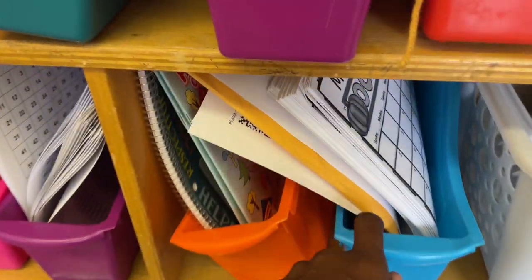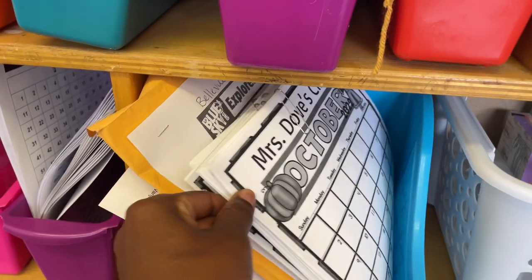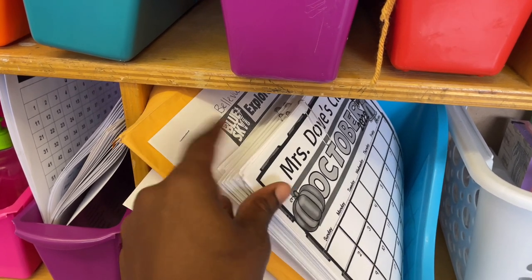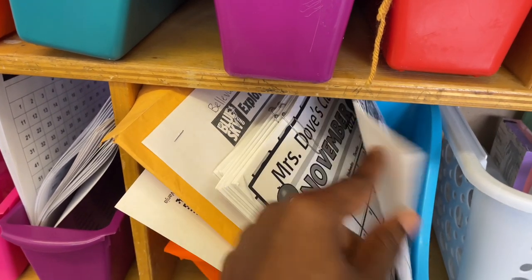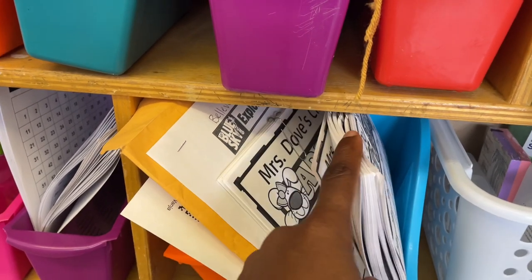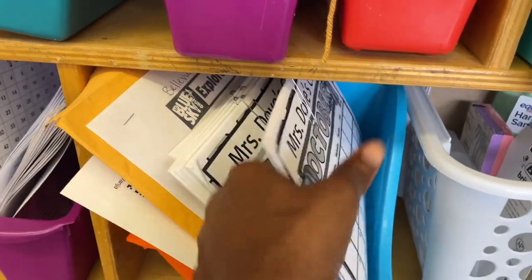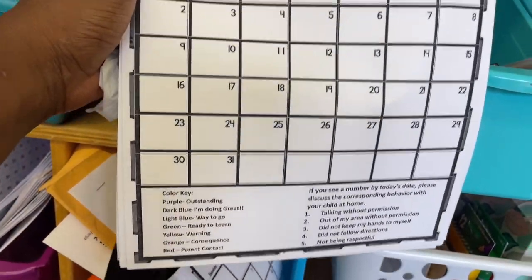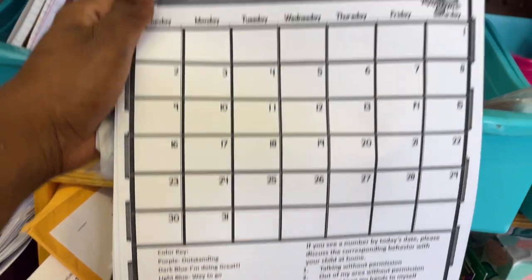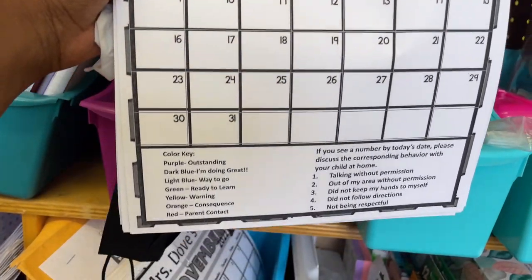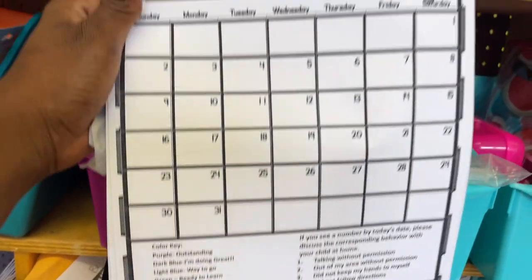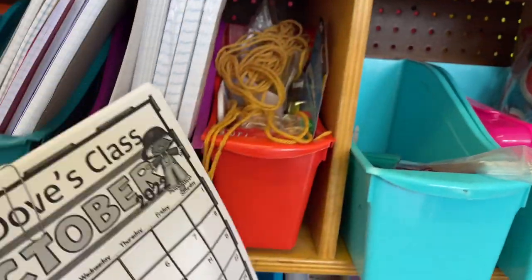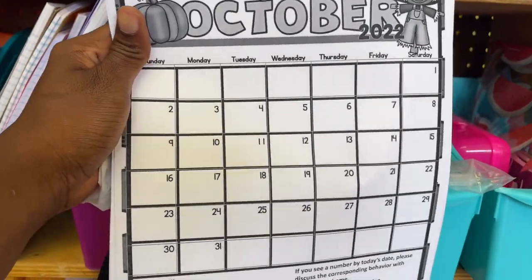Here is for our behavior charts. I went ahead and copied these just for the year so I don't forget and then get stuck that morning without them. This is a great way for parents to be able to keep track of how their children are doing daily. They'll just color in their calendar and their parent will be able to see the code and know how their behavior was — they do this every day. Wonderful for behavioral management.